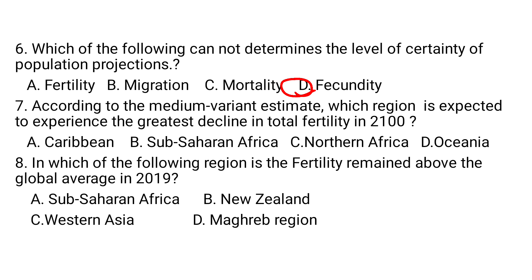Question 7: According to the median variant estimate, which region is expected to experience the greatest decline in total fertility by 2100? A. Caribbean. B. Sub-Saharan Africa. C. North Africa. Sub-Saharan Africa is the region expected to experience the greatest decline in total fertility by 2100, so the answer is B.